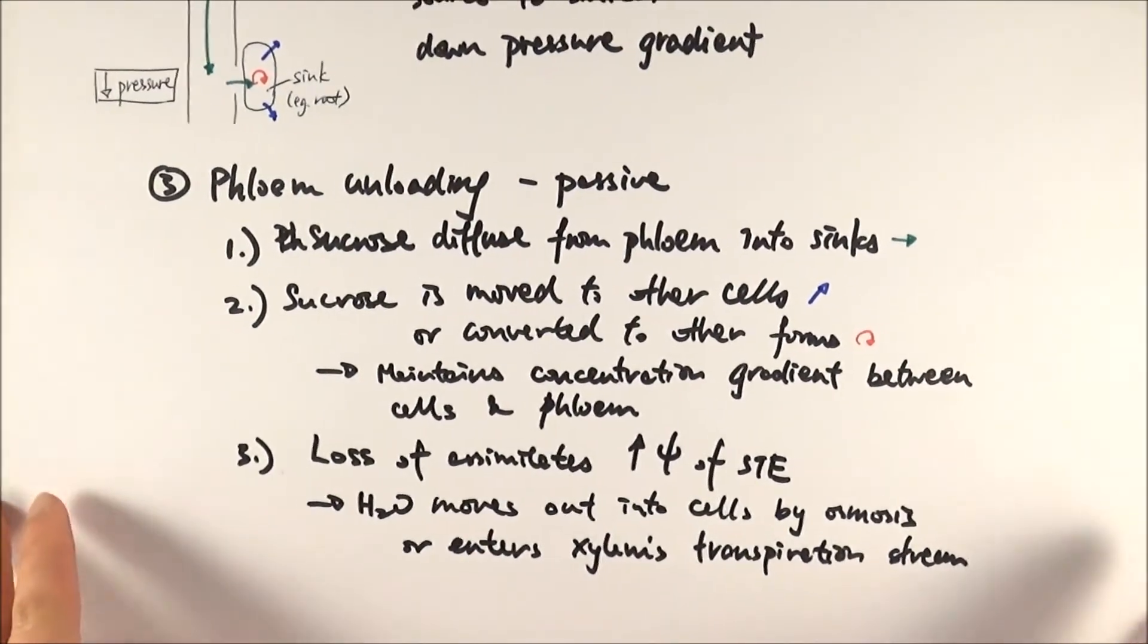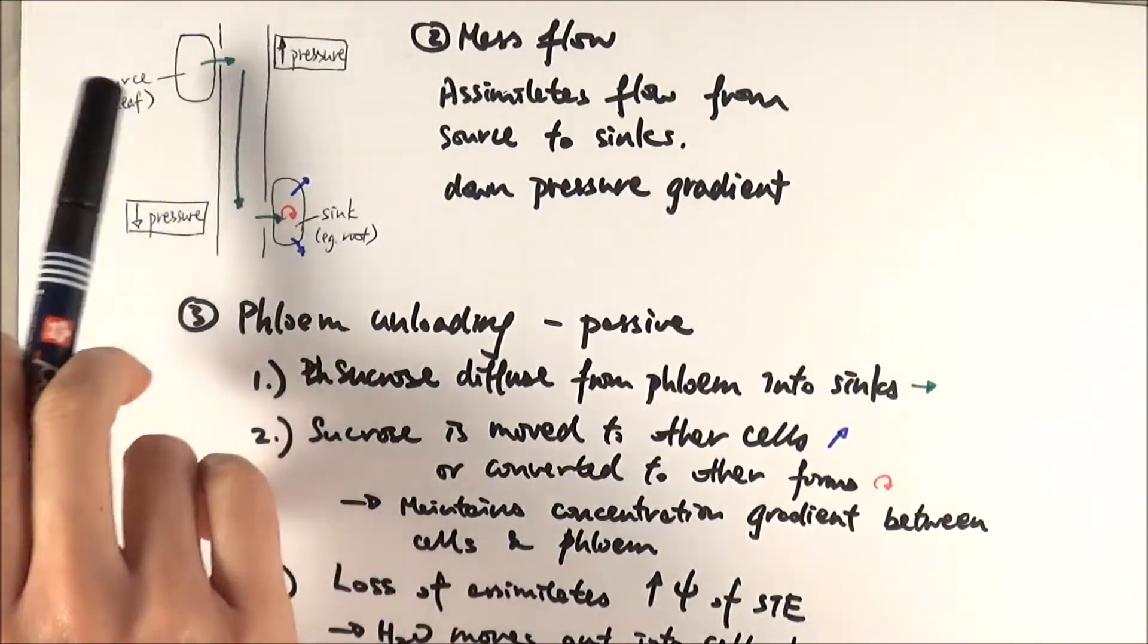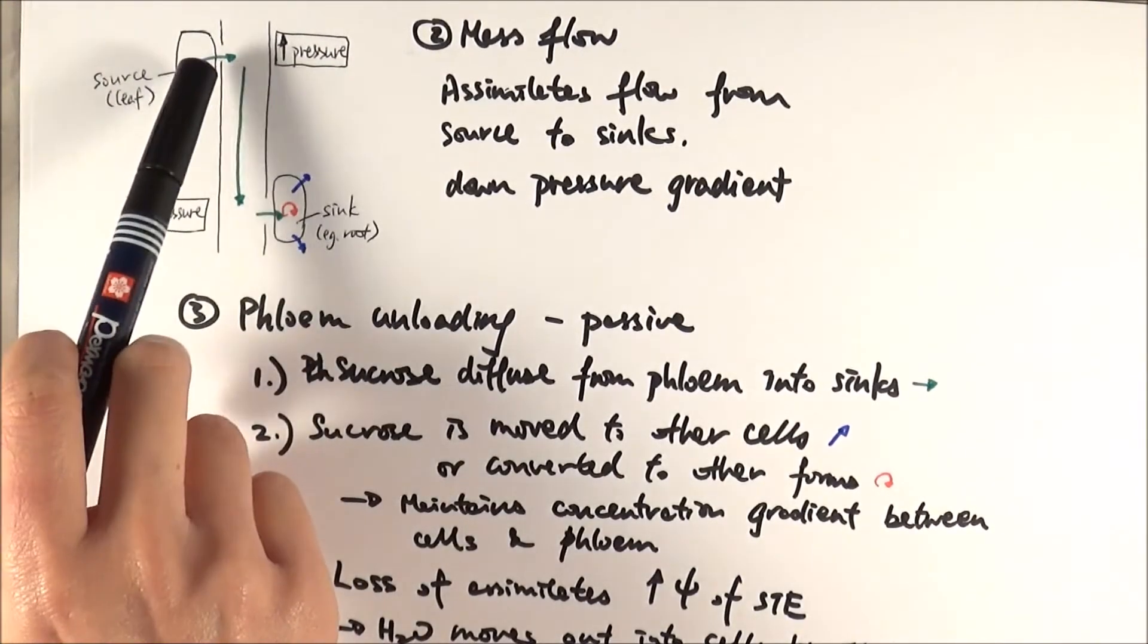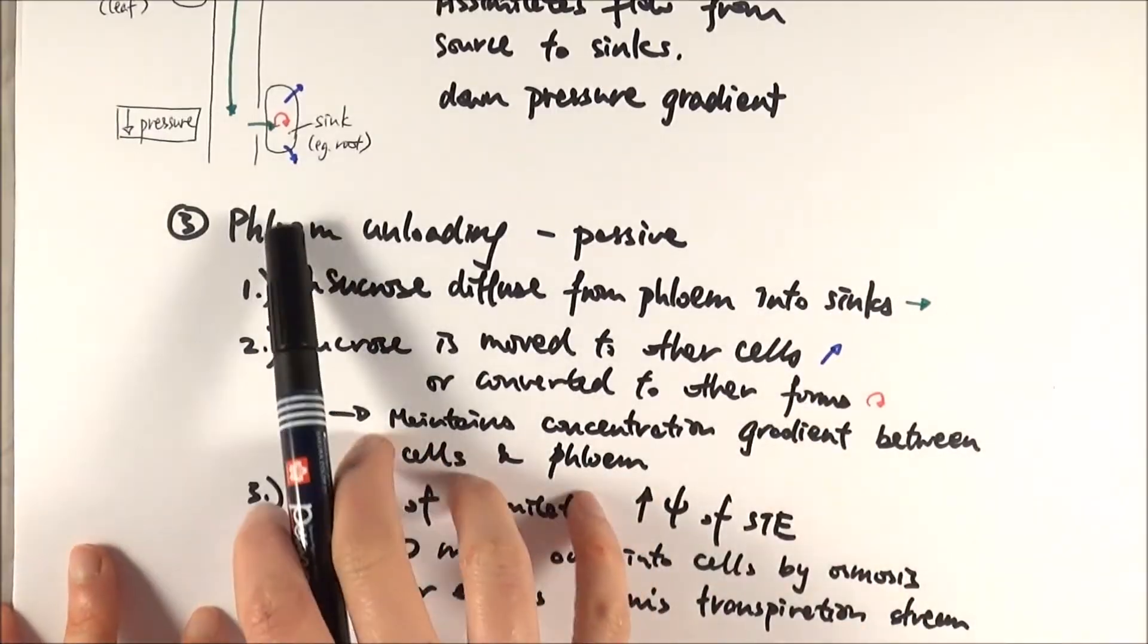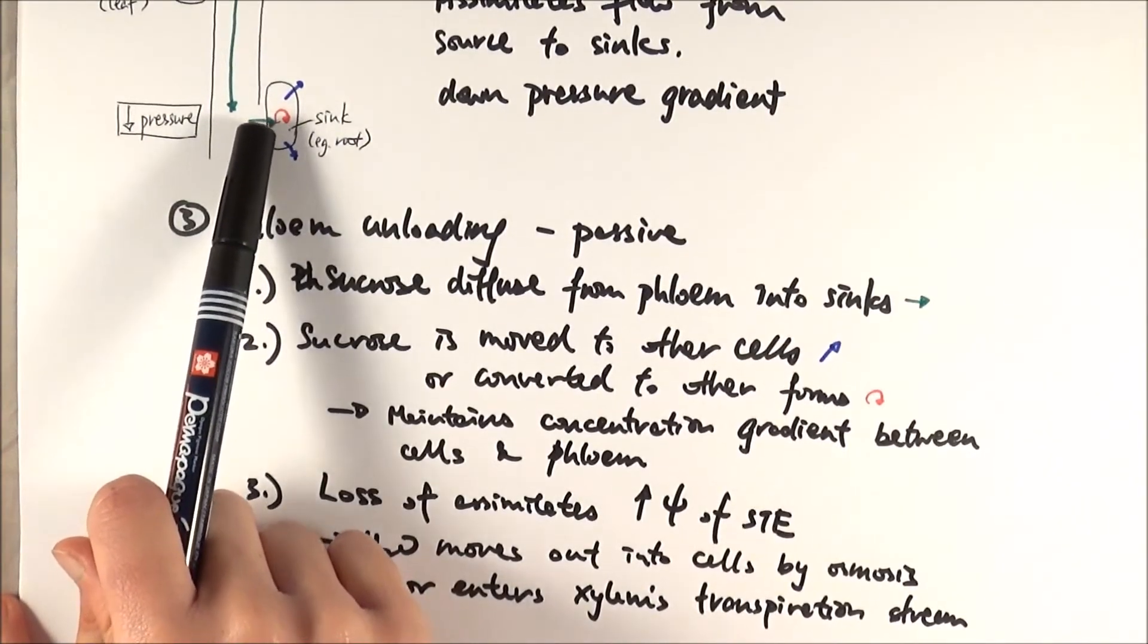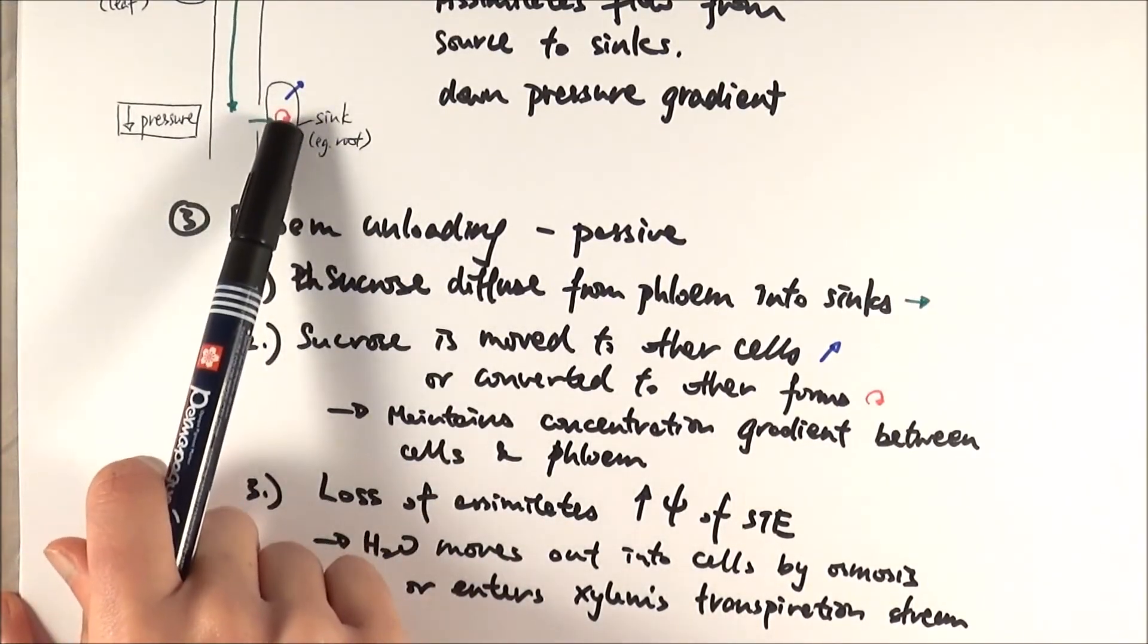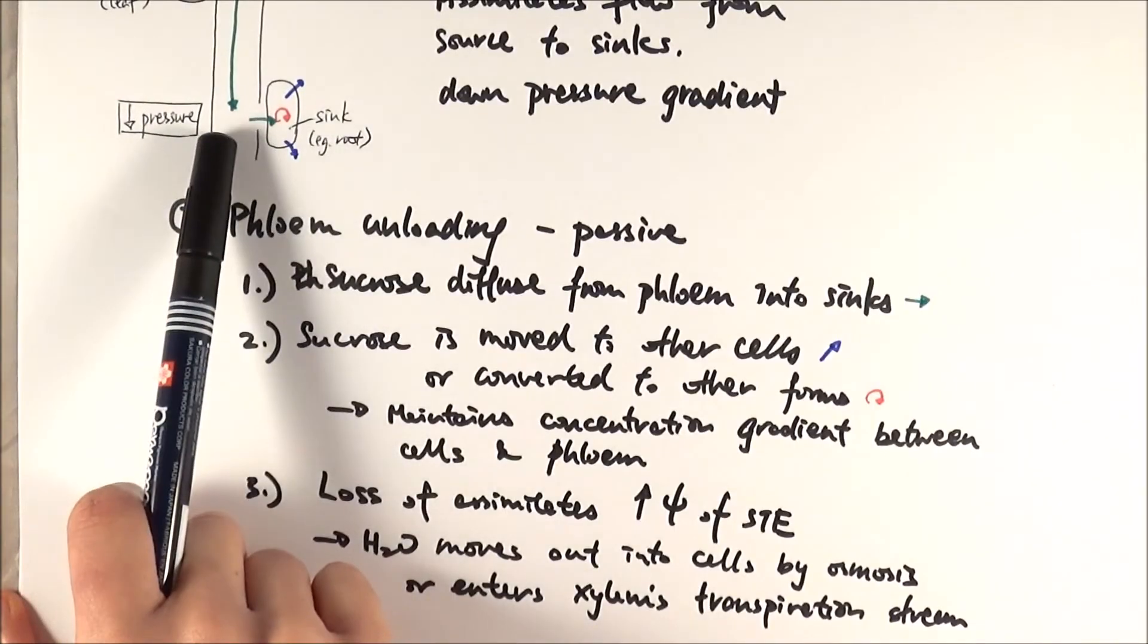There you have it. So a very quick summary. We've got the phloem loading that happens in this area, which is an active process by apoplast pathway. Then it goes into mass flow because of the turgor pressure. You get phloem unloading where the sucrose diffuses into the sink or the cells around it, and then it's moved to other cells around it or converted to something else, for example glucose, to maintain the concentration difference.